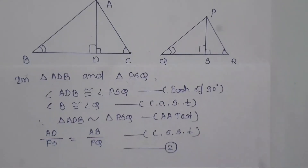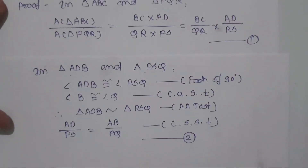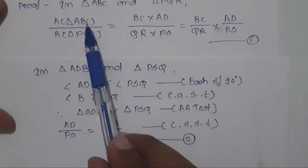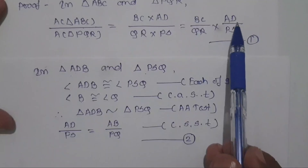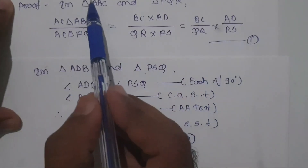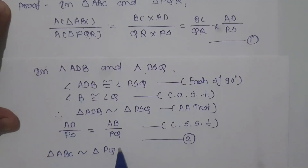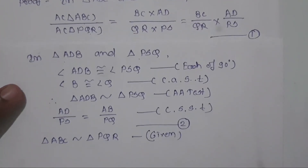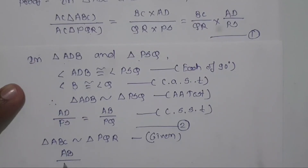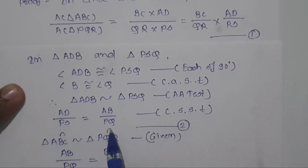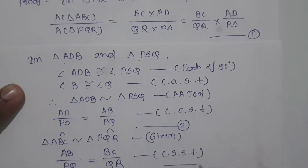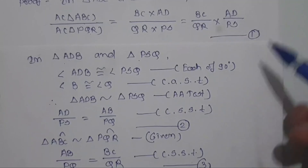From equation 1 we have area of triangle ABC divided by area of triangle PQR equals BC divided by QR into AD divided by PS. Since triangle ABC is similar to triangle PQR, corresponding sides are in proportion, so AB divided by PQ equals BC divided by QR. We call this equation number 3.